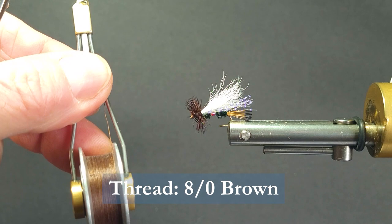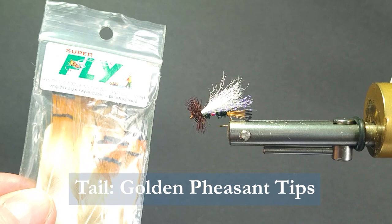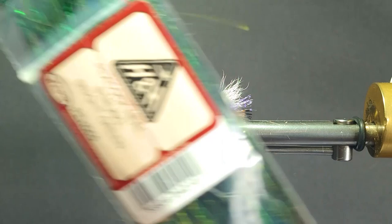For the body, I'm going to be using some peacock hurl. I've got the bright green here. You can use regular as well. Green just gives a little more coloration.